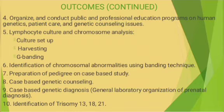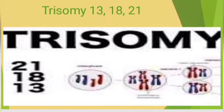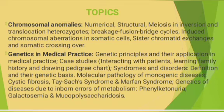Students should know lymphocyte culture and chromosome analysis — including culture set-up, harvesting, and G-banding — and be able to identify chromosomal abnormalities using banding techniques. They should know preparation of pedigrees and case-based studies, including case-based genetic counseling and diagnosis, general laboratory organization for prenatal diagnosis, and identification of trisomy 13, 18, and 21. An illustration of trisomy 13, 18, and 21 is provided.